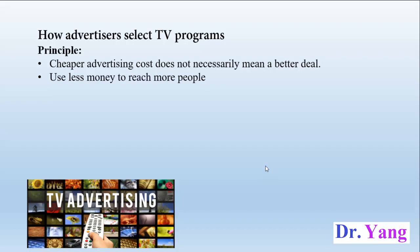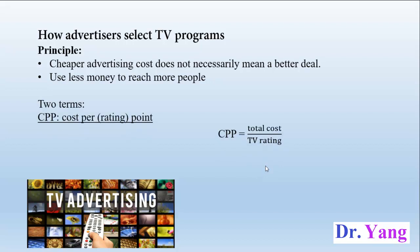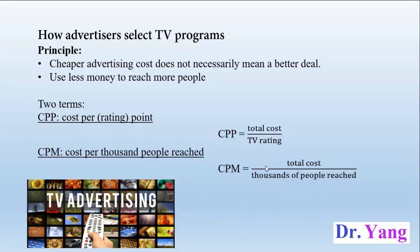So how can we find a better rate? There are two terms we use to compare different rates across different TV programs. The first one is CPP, which means cost per point — specifically rating point. So CPP equals the total advertising cost divided by the TV rating. Another term often used is CPM, which means cost per thousand people reached. Here M actually means thousand — it's the initial of a Latin word for a thousand. So CPM means total cost of advertising divided by the thousand people reached.